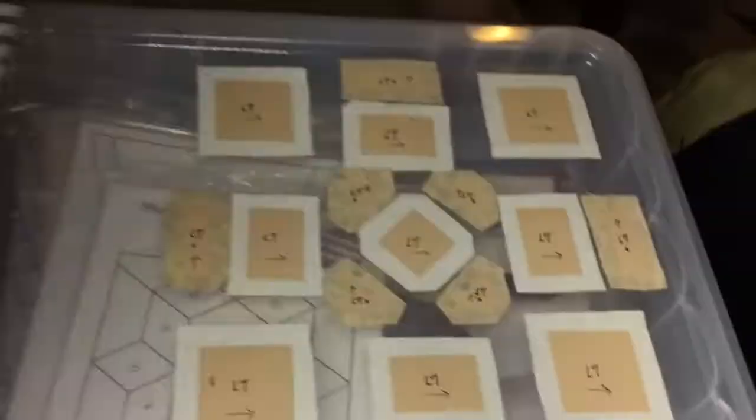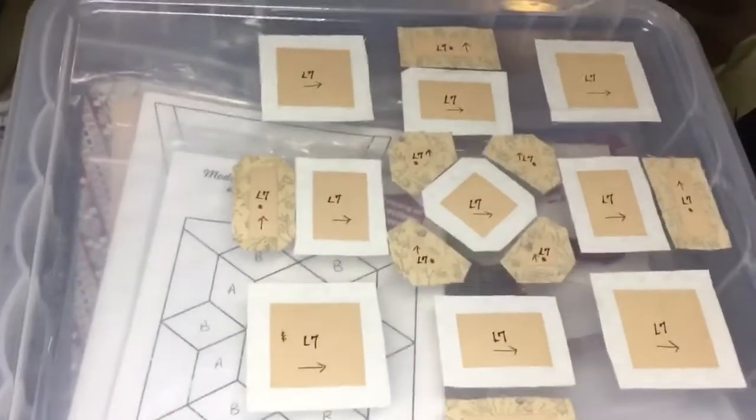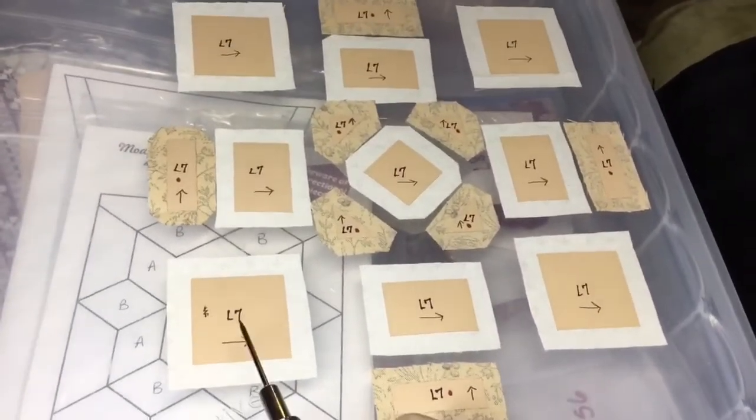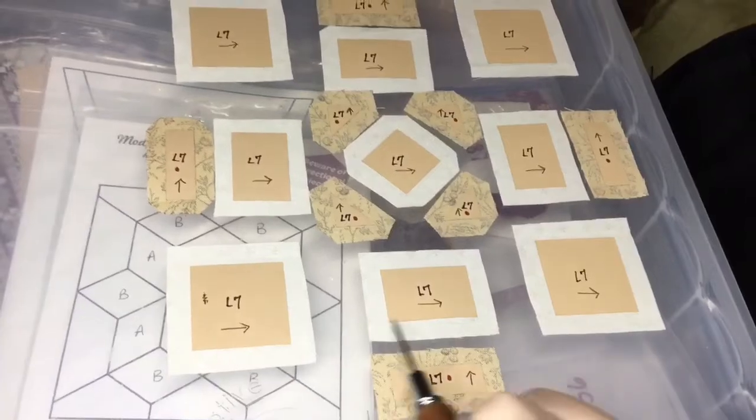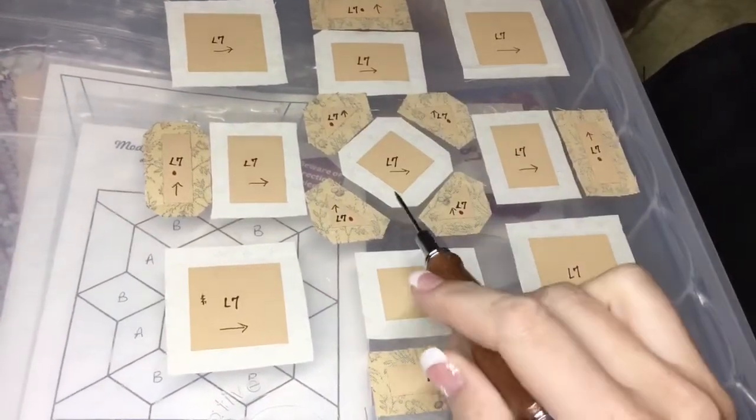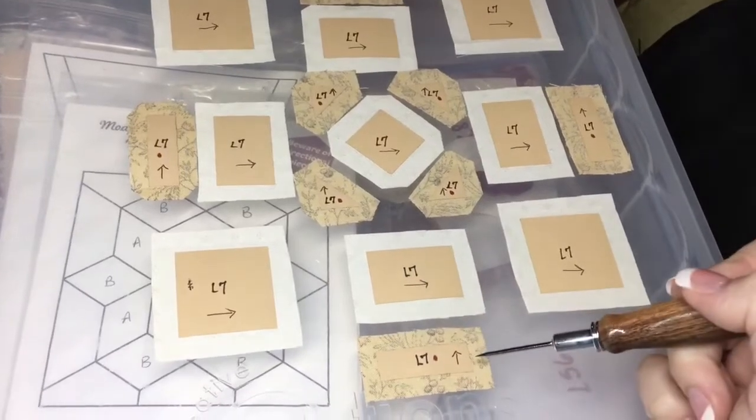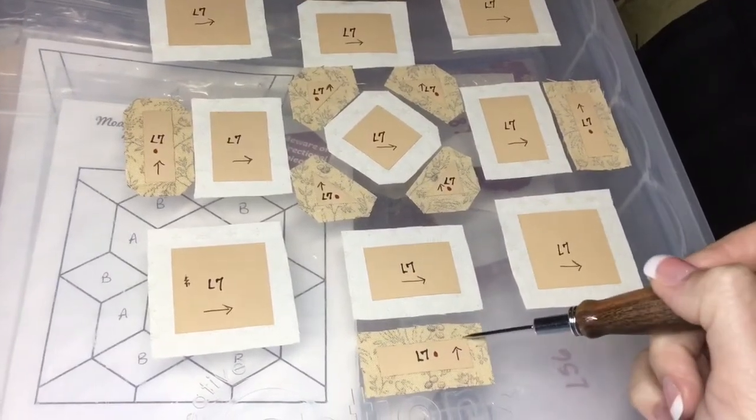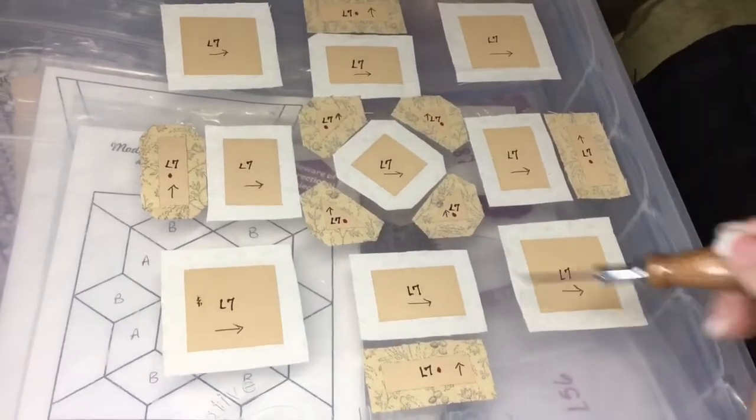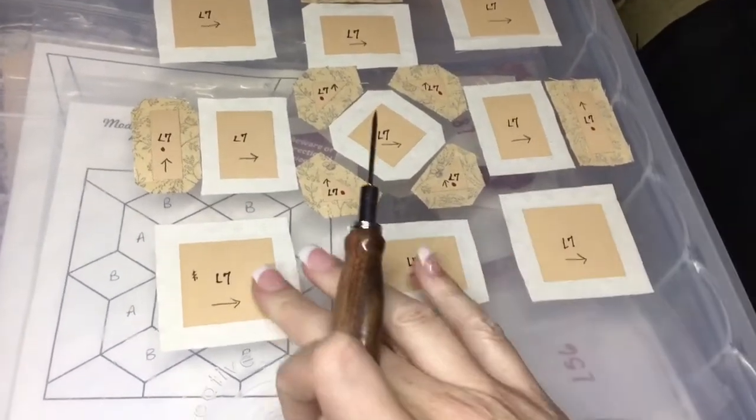I have my block all set up. I have two directional fabrics—a directional background with right-hand-facing arrows in each background section, and upward-facing arrows on my focus fabric sections. As usual, I'm going to baste this one row at a time.